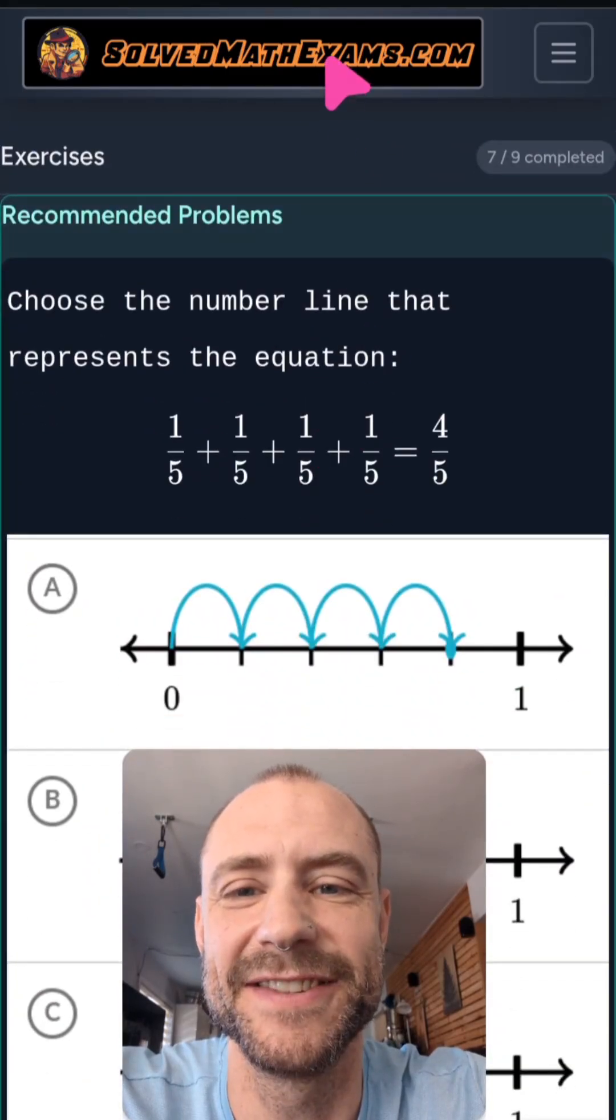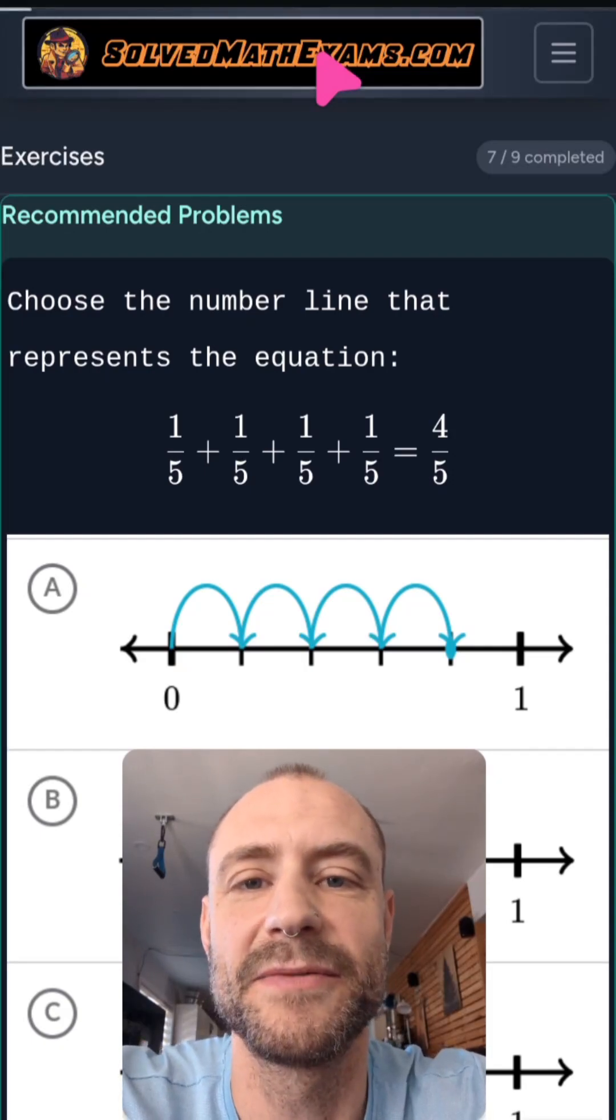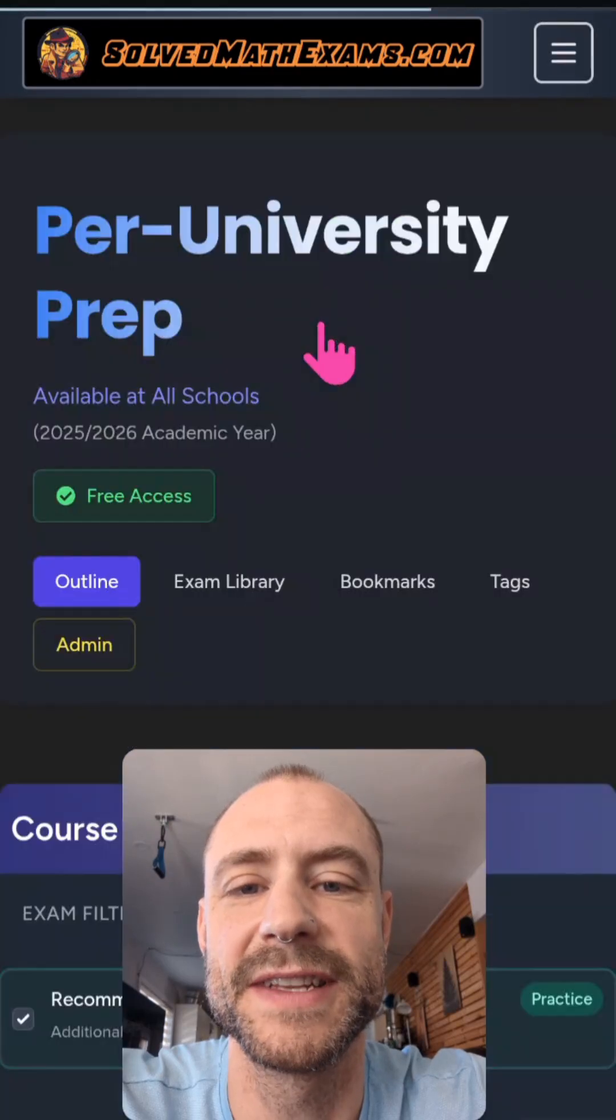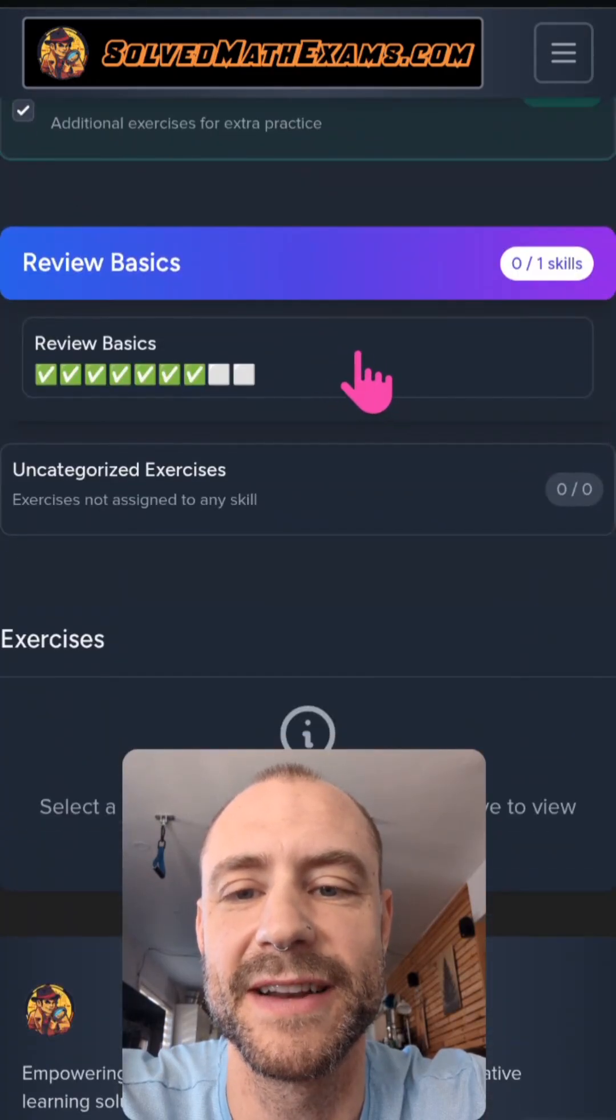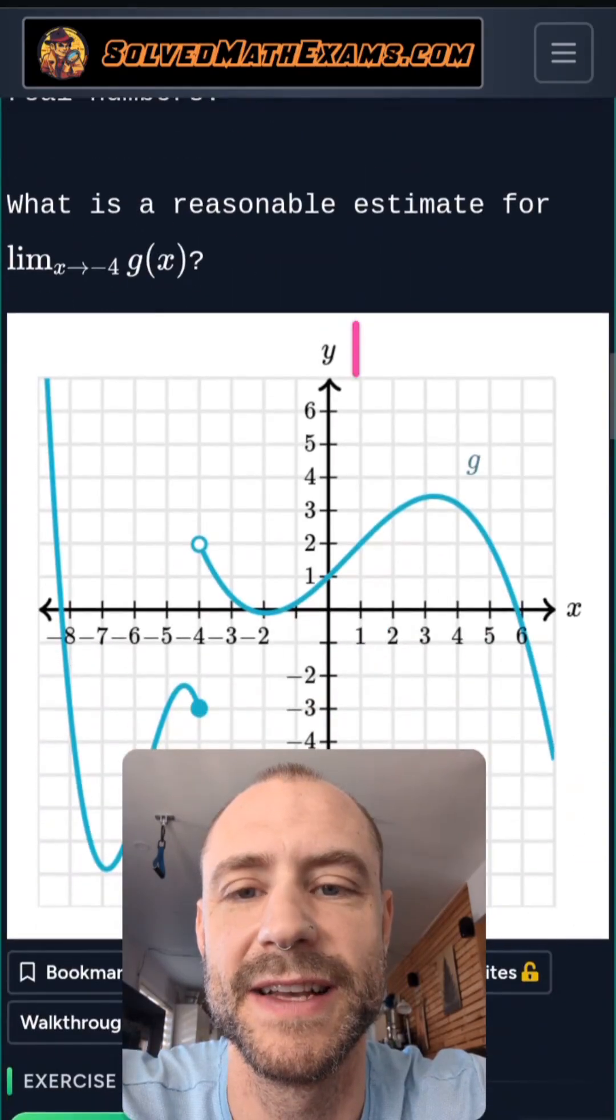Well, this actually shows you how to get to it too. You can log in, it's a free account. You can click to SolveMathExams.com, scroll down to pre-university prep - a little typo there I gotta fix - and then in review basics, you click here. I think it's the second or third question, it's the third question.